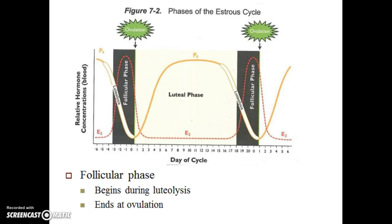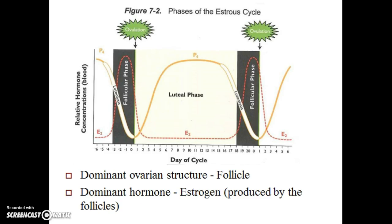The follicular phase begins during luteolysis and ends at ovulation. During the follicular phase, follicles are growing and developing. As follicles grow, they secrete estrogen. Hence, estrogen is considered to be the dominant hormone during the follicular phase of the estrous cycle. The dominant ovarian structure during the follicular phase is the follicle.